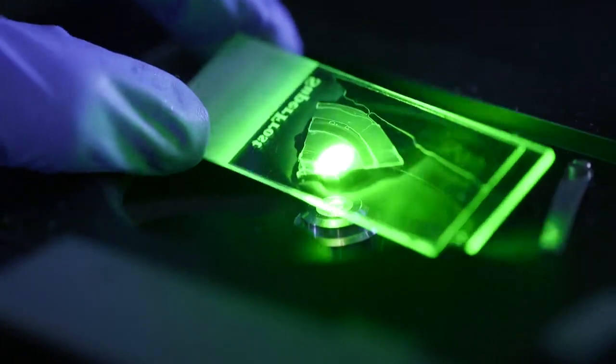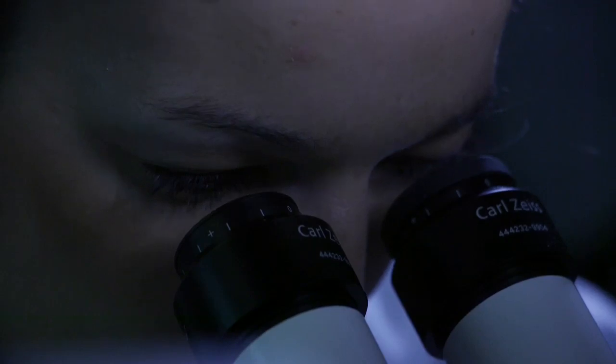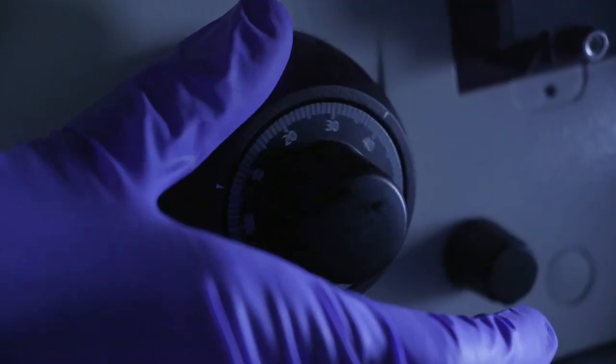After the experiment, samples are thoroughly analyzed using different high-throughput omics techniques to look at changes in the human cells. For example, immune responses or gene expression differences.